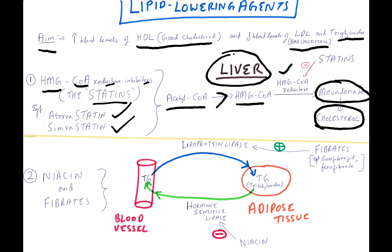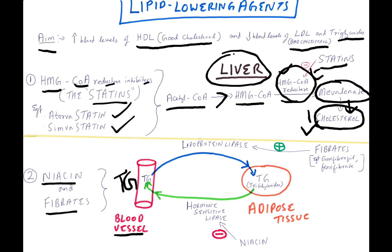Mevalonate in turn gives rise to cholesterol. What statins do is inhibit HMG-CoA reductase, hence synthesis of cholesterol is decreased. Number two is niacin and fibrates. Triglycerides in the blood vessel go to adipose tissue under the action of lipoprotein lipase.